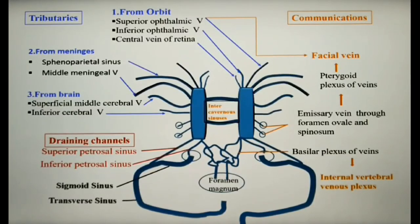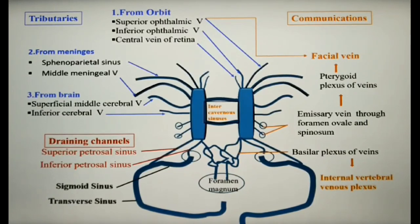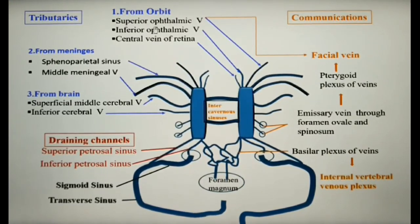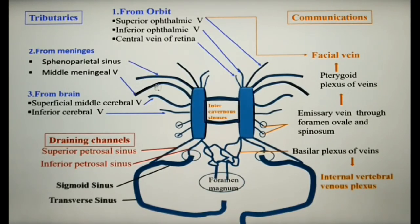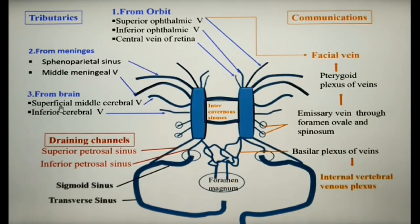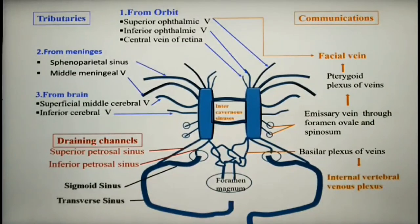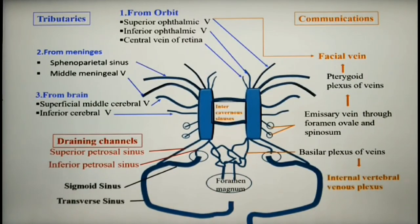There are several incoming channels to the cavernous sinus. From the orbit, the superior ophthalmic vein, inferior ophthalmic vein, and central vein of the retina drain into the cavernous sinus. The meninges drain via the sphenoparietal sinus and middle meningeal vein. Drainage from the brain reaches the cavernous sinus through the superficial middle cerebral vein and inferior cerebral vein.